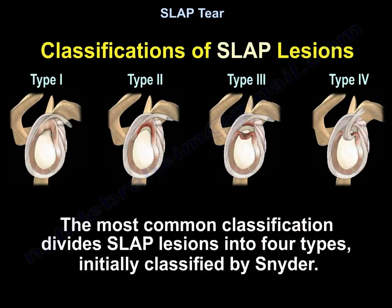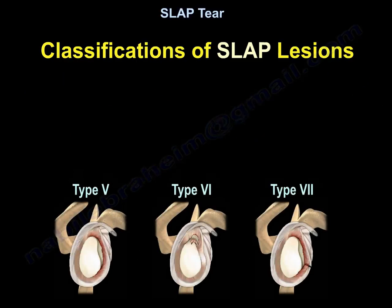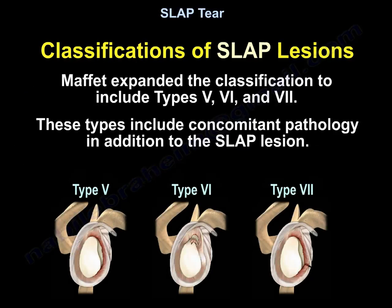The most common classification divides SLAP lesions into four types, initially classified by Snyder. Maffet expanded the classification to include type 5, type 6, and type 7. These types include concomitant pathology in addition to the SLAP lesion.